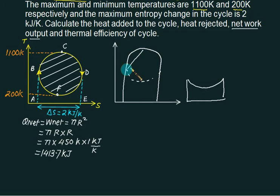What is the Q net? This quantity is heat supplied. This quantity is heat rejected. What is Q net? Heat supplied minus heat rejected. So this area you have to calculate.